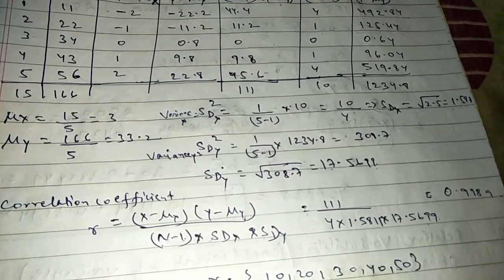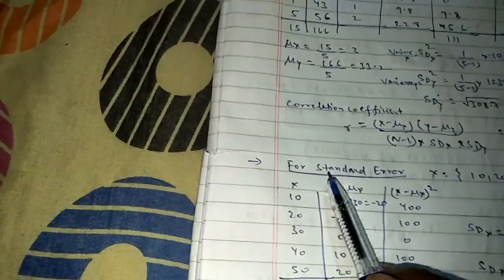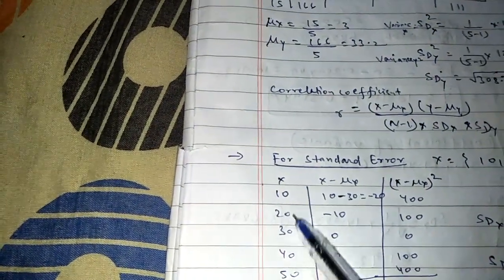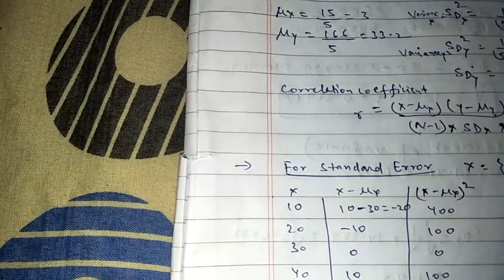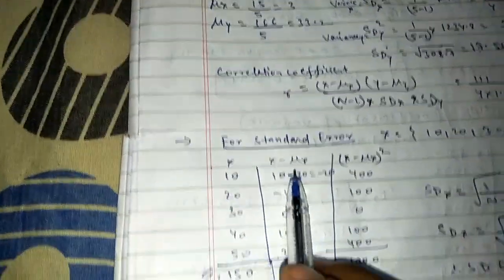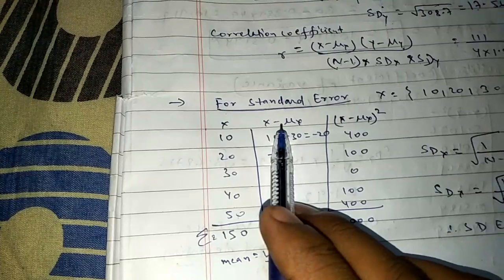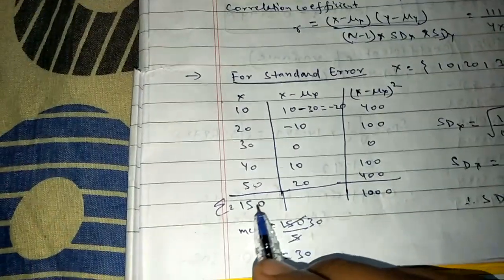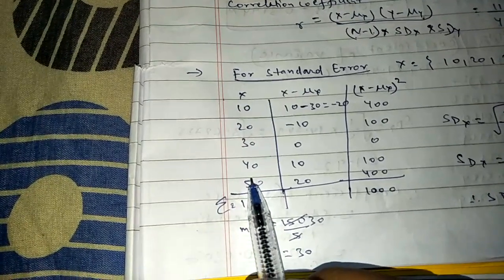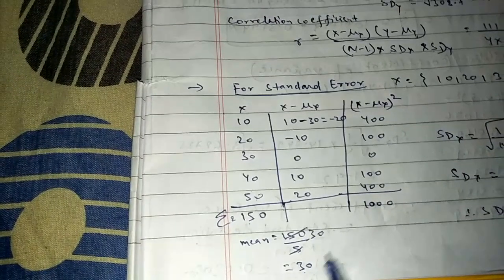Now moving to calculate the standard error. For x values given, construct a table with column x, n, and summation. The summation of x is 150. The mean is 150 divided by 5 equals 30. Then calculate x minus μx for each element.